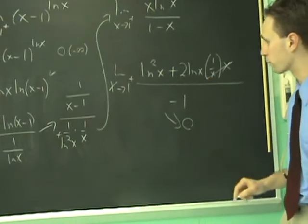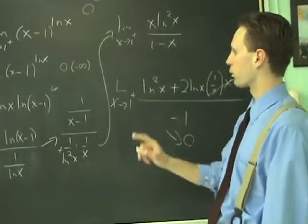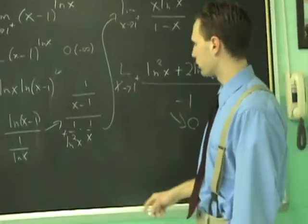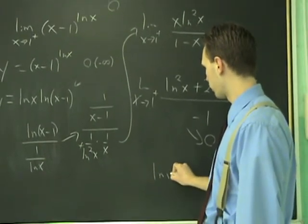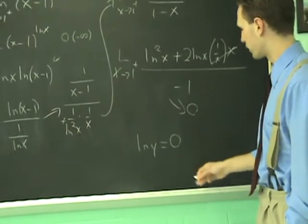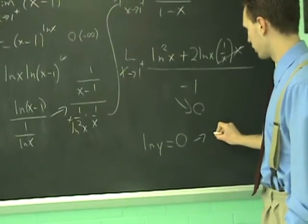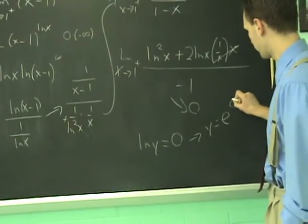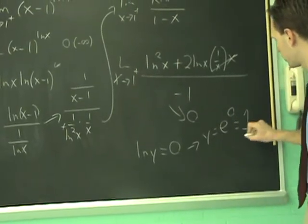Not done yet, there's one more step. The original thing was y. So, we have ln(y) equal to zero after we took the limit. Final step, exponentiate both sides. So you get y equals e to the zero, and the final limit is one.